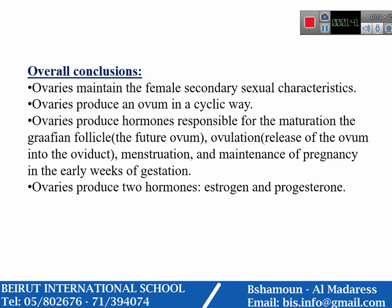The overall conclusions: ovaries maintain the female secondary sexual characteristics. They produce an ovum in a cyclic way. They produce two types of hormones — estrogen and progesterone — which are responsible for the maturation of the Graafian follicle, or the future ovum, and for ovulation.